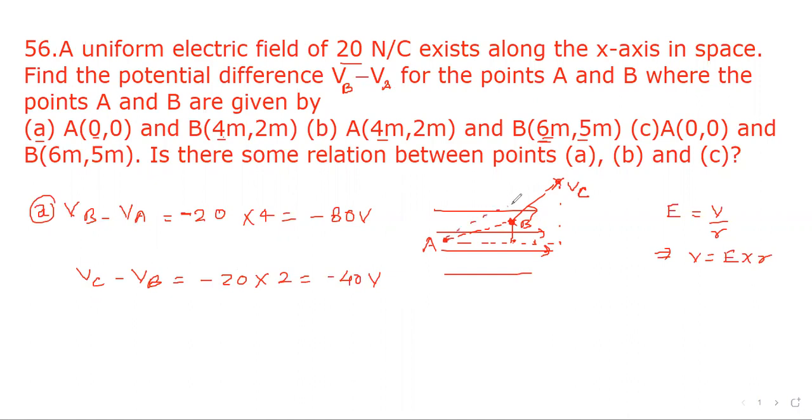Now if we find potential directly from A to this point, although we have written it separately as A, the points as A, but here we have assumed this is A, this is B and this is C. So we find potential difference between C and A.